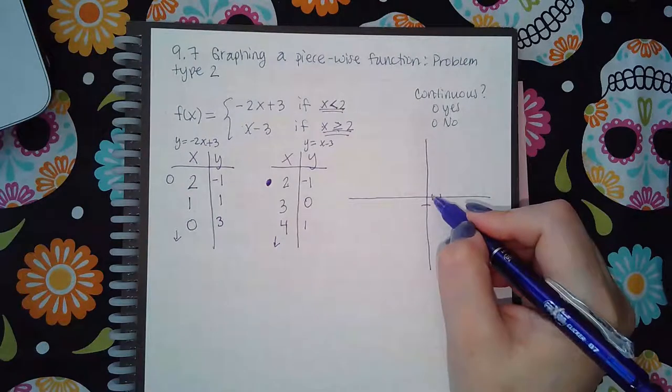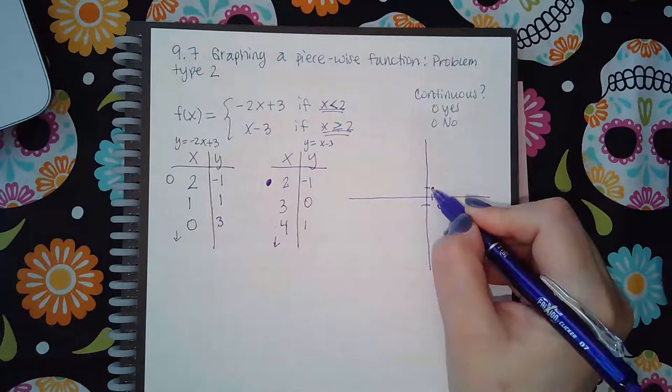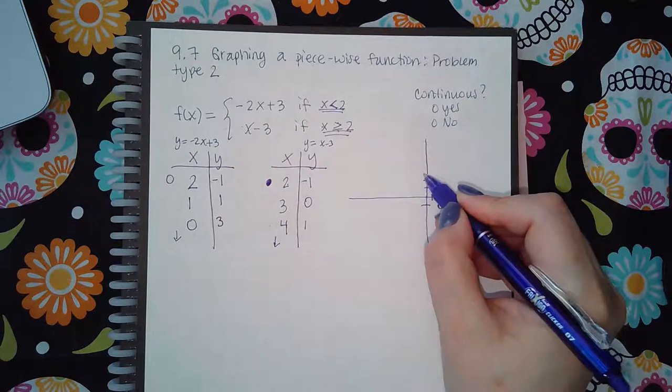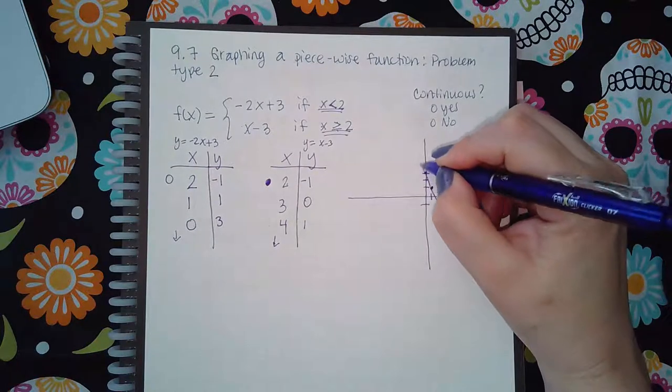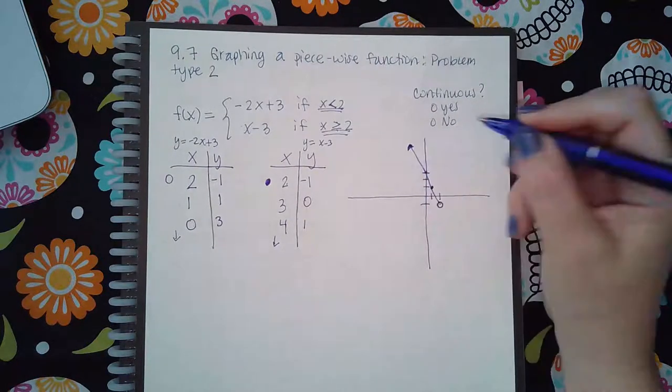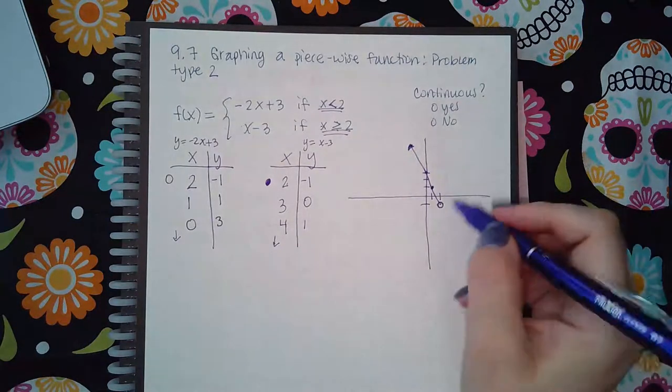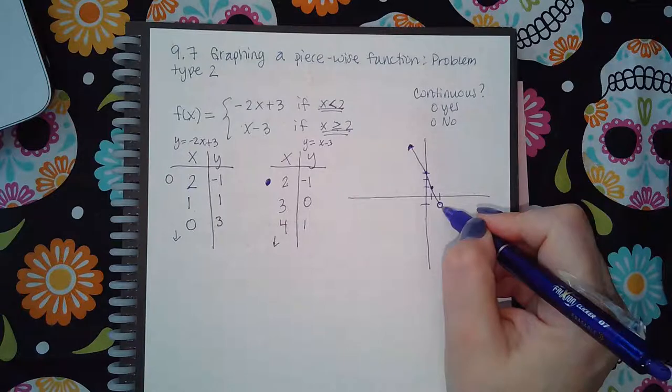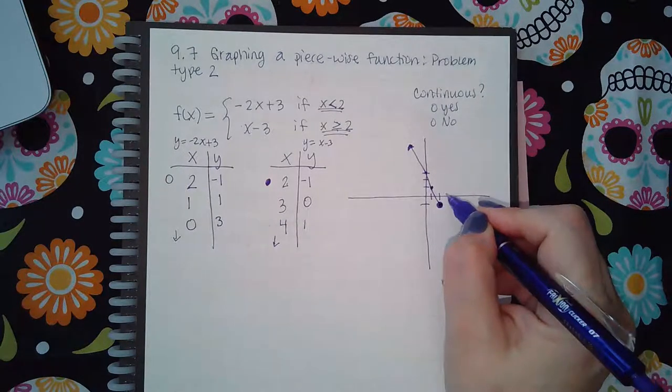Now over here I'm going to draw 2 and negative 1, but now I've got to make it solid so it basically fills in the hole. Then 3 and 0, and then 4 and 1, so the line goes in this direction.